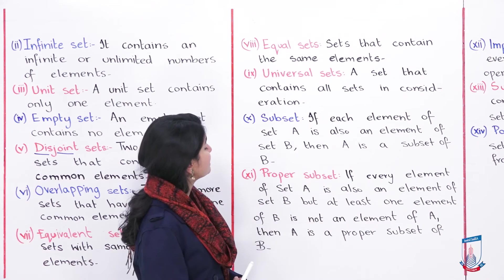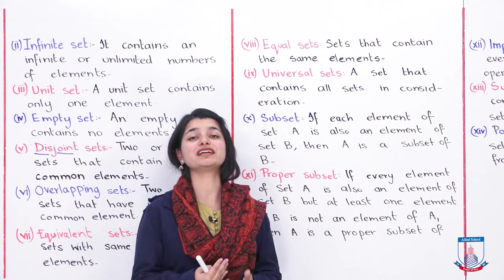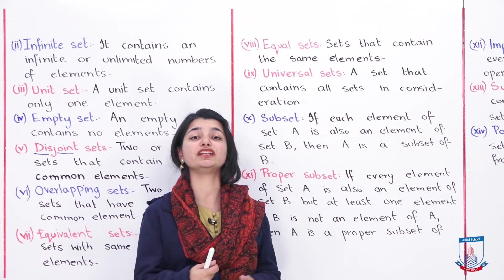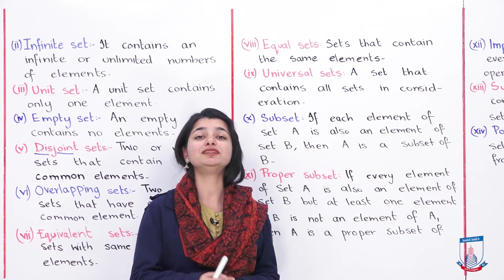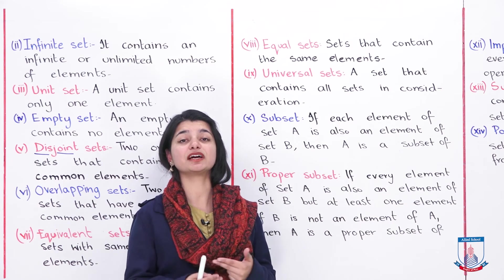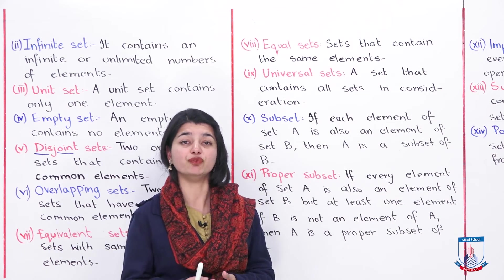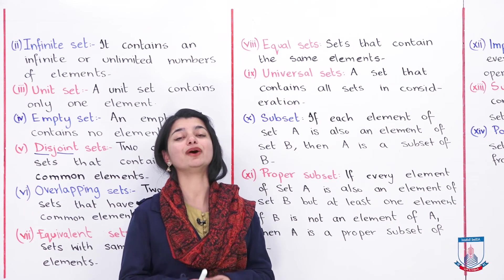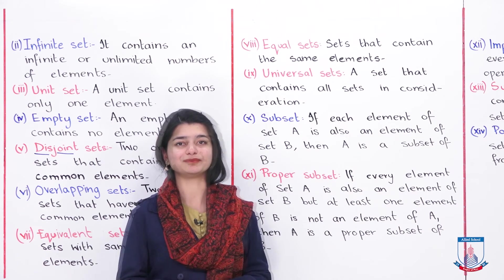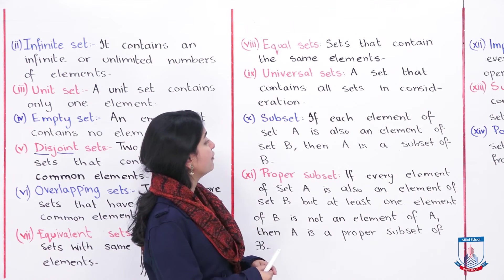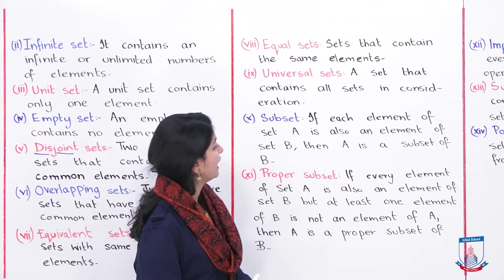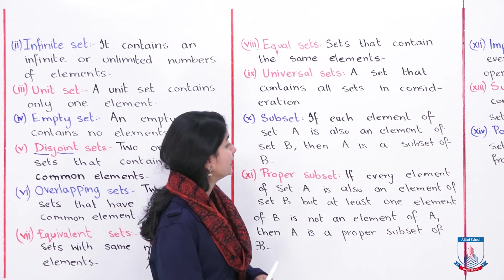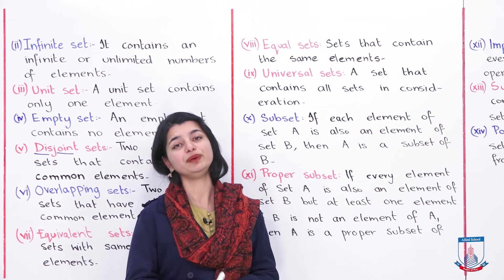Next we have subset. The sets terminology is covered, now let's talk about subsets and their relationships. The first definition: a subset is — if each element of set A is also an element of set B, then A is a subset of B.